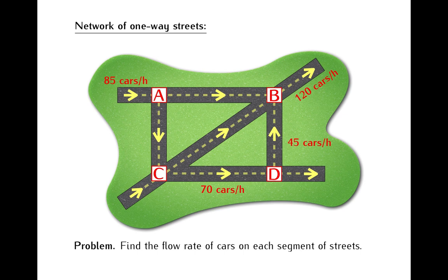We will denote the traffic flow on the streets where we didn't take measurements by variables x1, x2, x3, x4 and x5. And we will try to see if we can compute the values of these variables using the data that we have at hand.